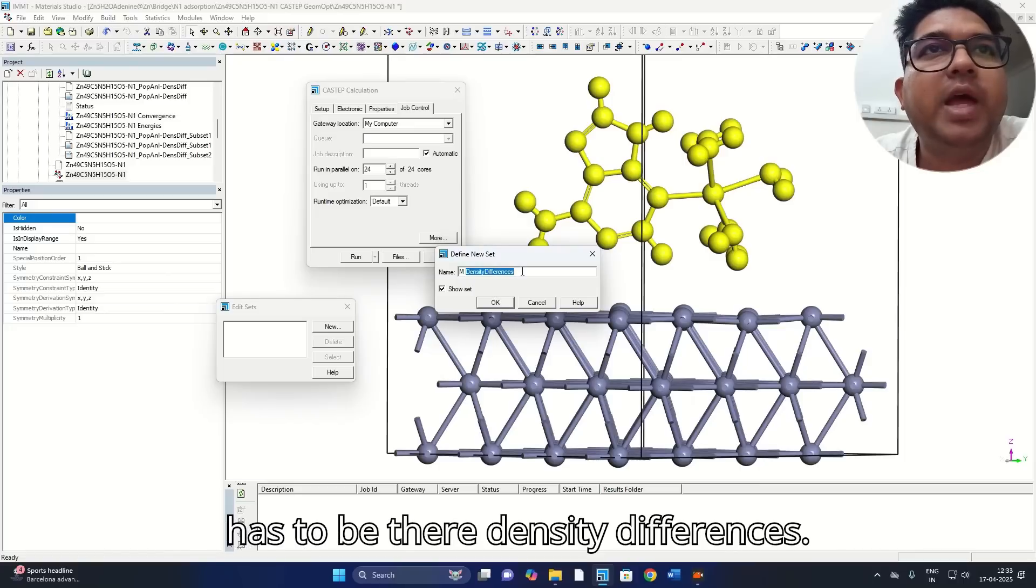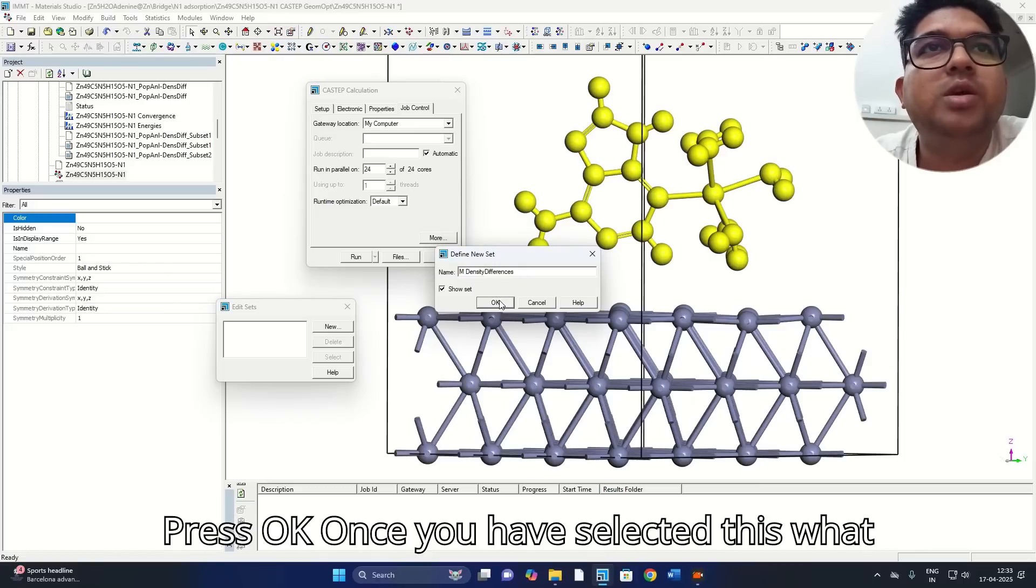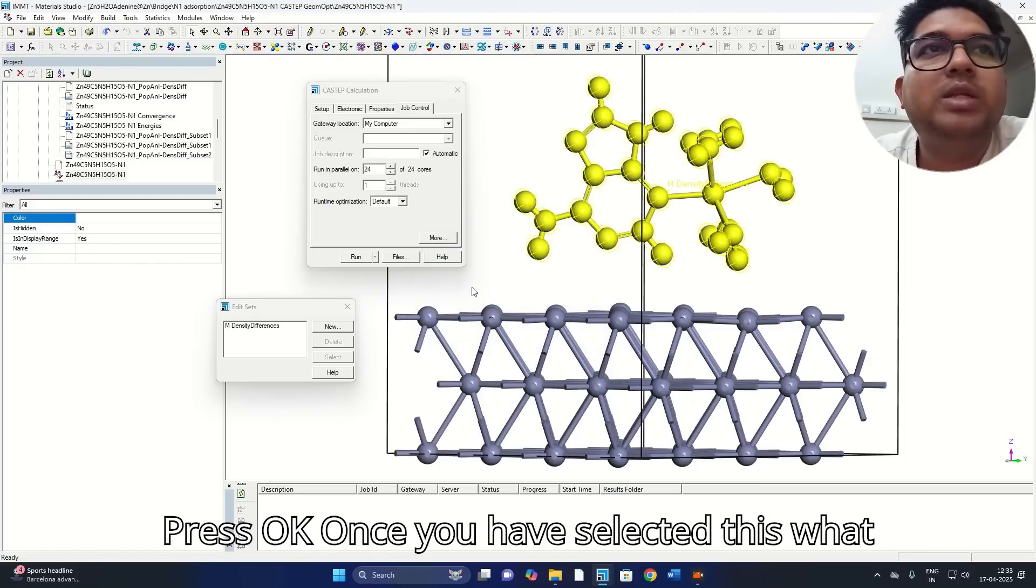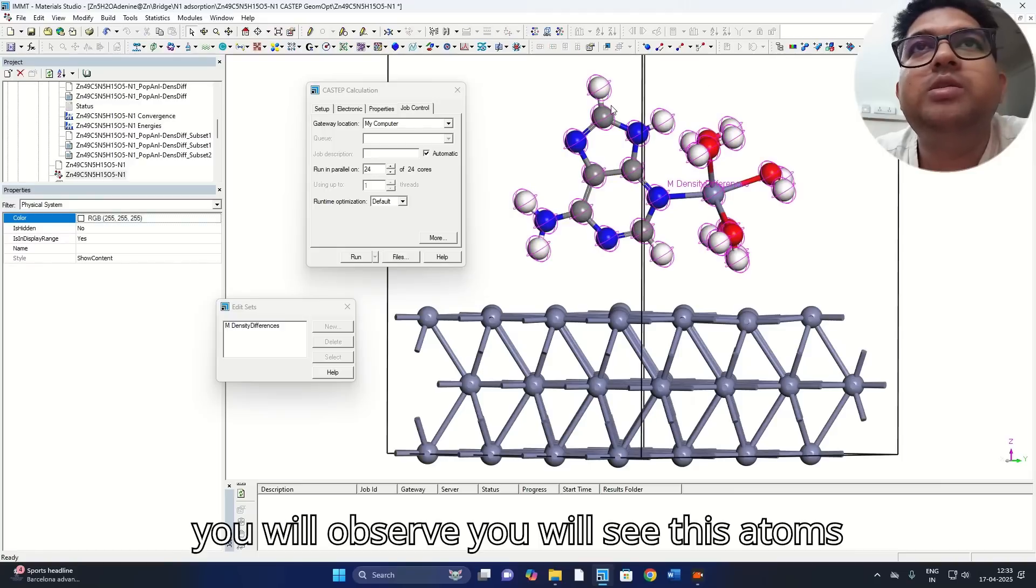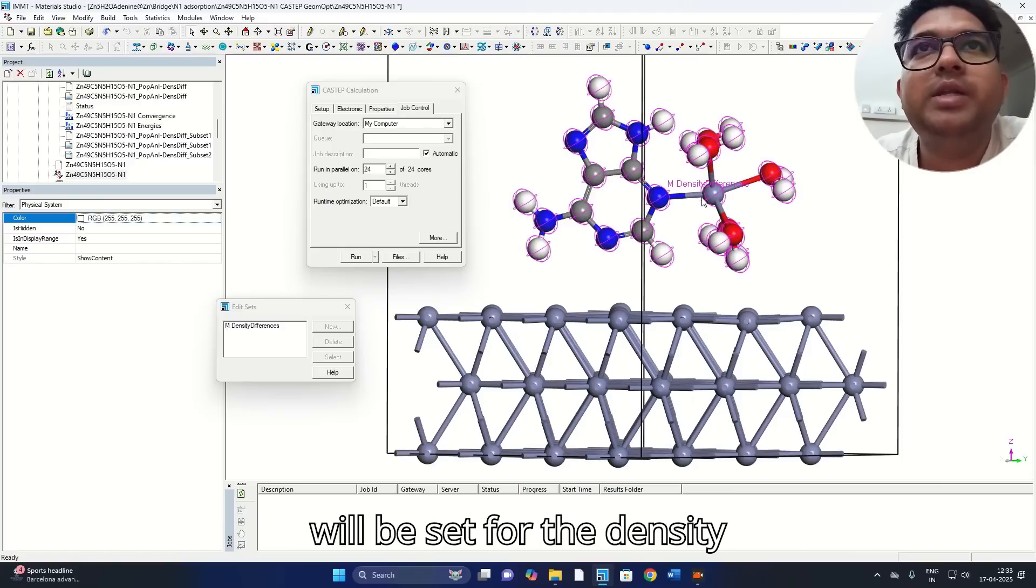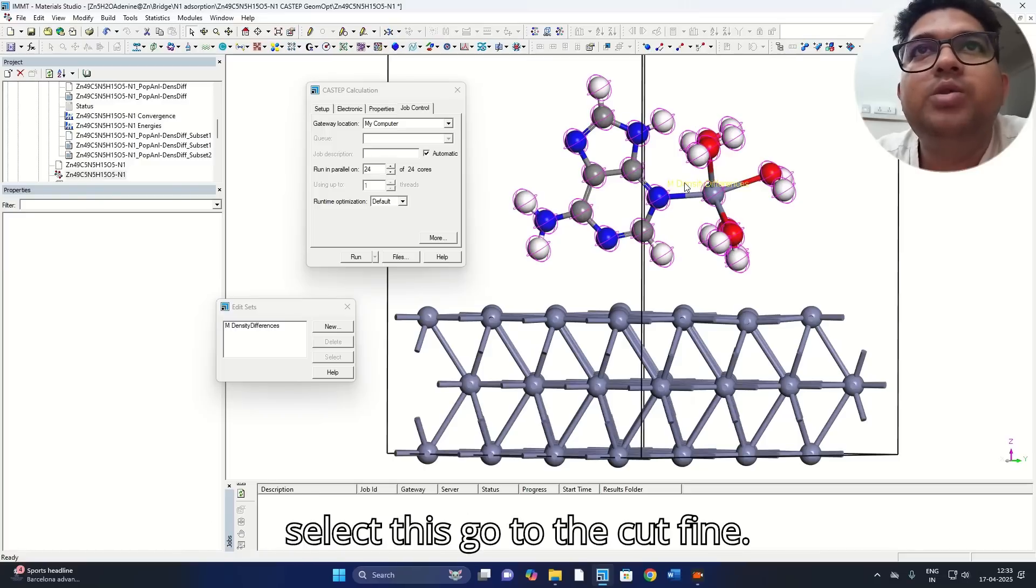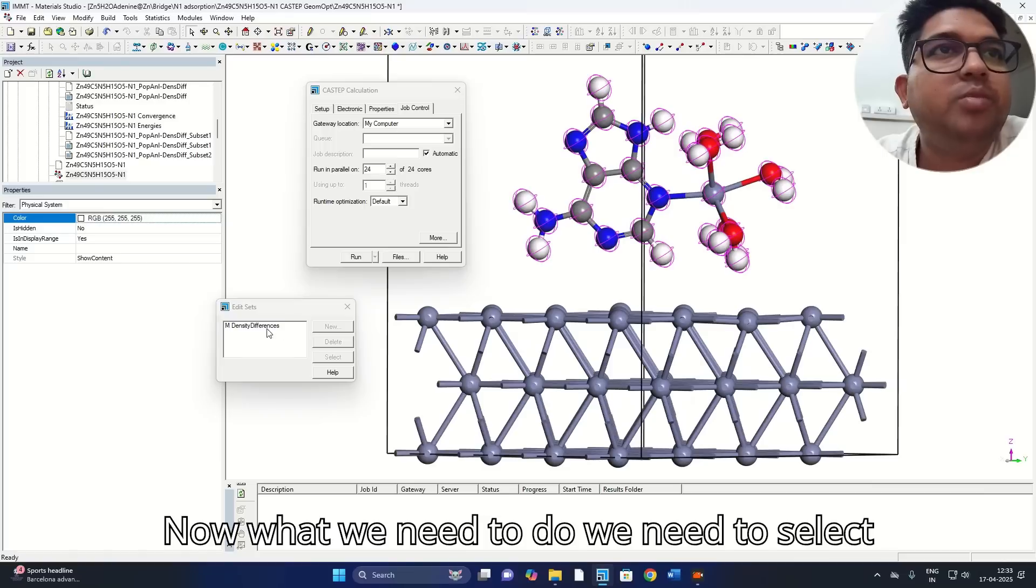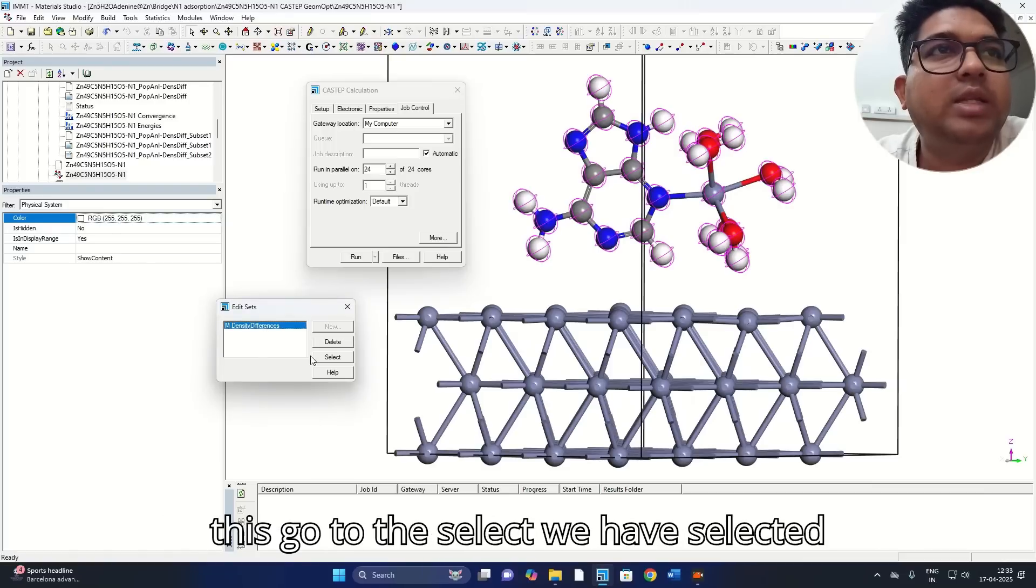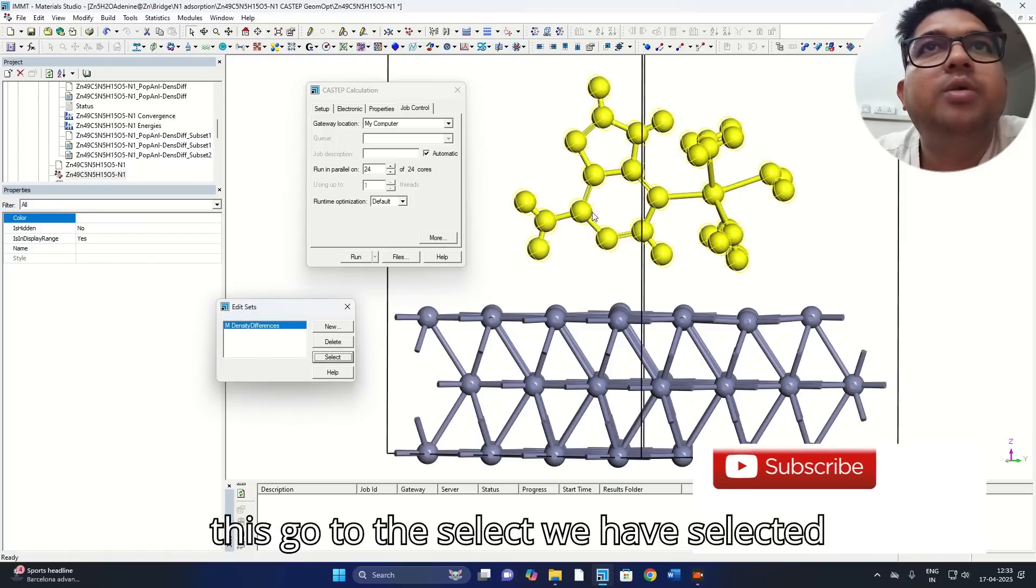Once you have selected this, what you will observe, you will see these items will be set for the density electron density difference. Now you just select this, go to the Set menu. Now what we need to do, we need to select this, go to the select, we have selected this molecule.